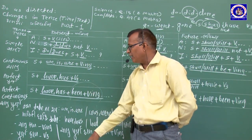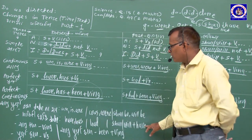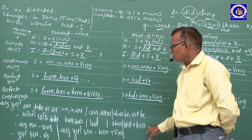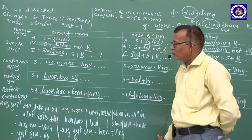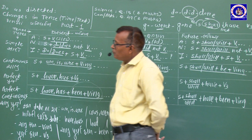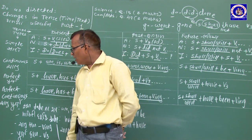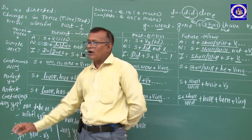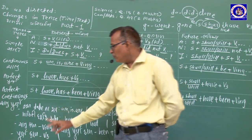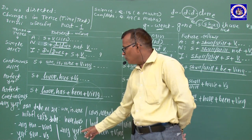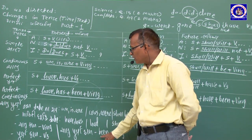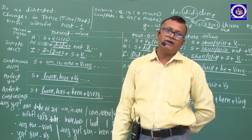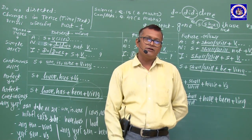Recap: Continuous Tense = Verb-ing. Perfect Tense = V3 (Past Participle). Perfect Continuous = Verb-ing + been. Part 1ની ચર્ચા કરી. Part 2ની ચર્ચા આગળ — Part Twoની અંદર ચર્ચા કરીશું. વિદ્યાર્થી મિત્રો, tense revision complete.